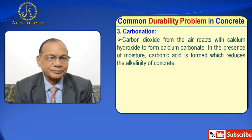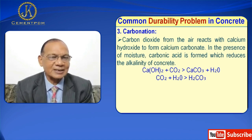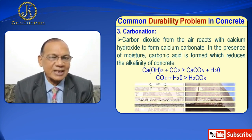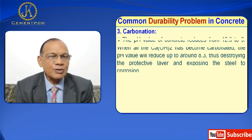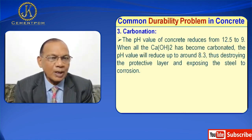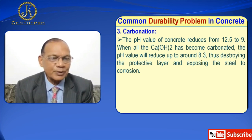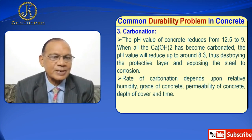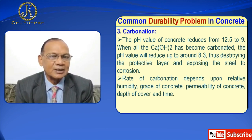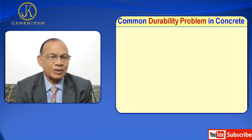Now I will discuss carbonation. Carbon dioxide from the air reacts with calcium hydroxide to form calcium carbonate. In the presence of moisture, carbonic acid is formed, reducing the alkalinity of concrete. That is: Ca(OH)₂ + CO₂ = CaCO₃ + H₂O, and CO₂ + H₂O = H₂CO₃. The pH value of concrete reduces from 12.5 to 9. When all the calcium hydroxide has become carbonated, the pH value will reduce to around 8.3, thus destroying the protective layer and exposing the steel to corrosion. Rate of carbonation depends upon relative humidity, grade of concrete, permeability of concrete, depth of cover, and time. Normally, 1 mm carbonation is reported per year in normal-grade concrete.